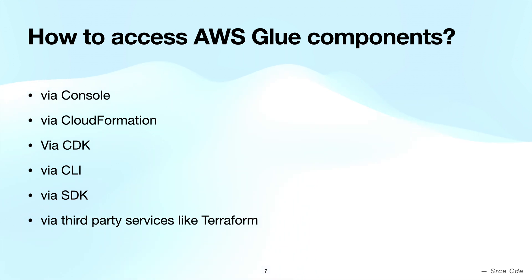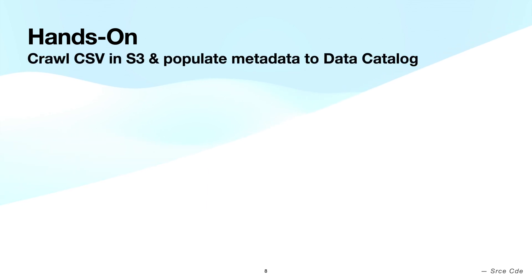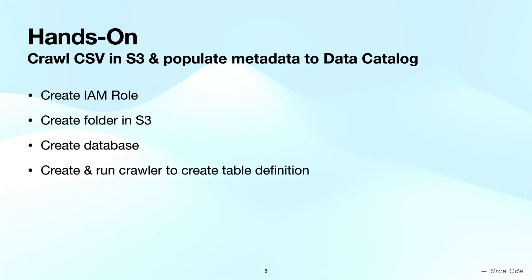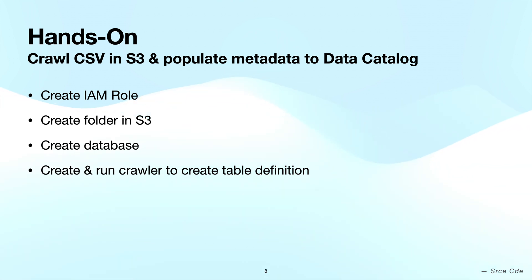Since we have a good understanding of AWS Glue Data Catalog and crawlers, let's dive into the hands-on implementation. We will create a schema structure for one of the CSV files located in S3 using AWS crawlers. In the process, we will create folders in the S3 bucket, create a database, and create and run a crawler which will populate the table definitions.